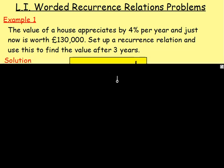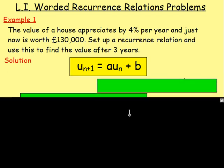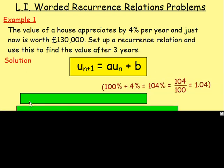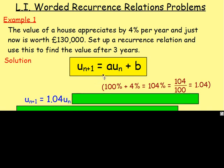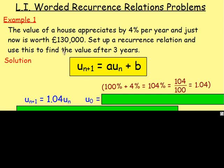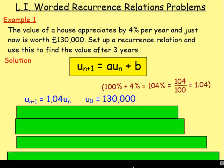Remember, recurrence relations are always of the form u(n+1) = a·u(n) + b. If it's going up by 4%, very similar to multipliers, 100 add 4 is 104, divided by 100 is 1.04. So you can set up a recurrence relation saying u(n+1) equals 1.04 times the previous value. You're not adding or subtracting anything — it's just 1.04 times the previous value. And u0, right at the start, the house is worth 130,000. So u0 = 130,000. That's us set up our recurrence relation.